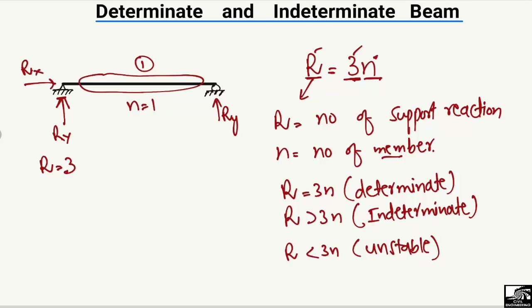Now we apply the formula. If r equals 3n, it is determinate. If greater, it is indeterminate. If less, it is unstable. We should always keep in mind that when it is a determinate beam — that is, r is equal to 3n — we can find out the support reactions.